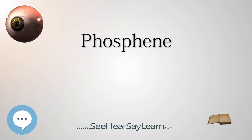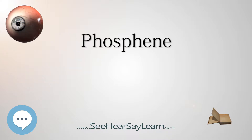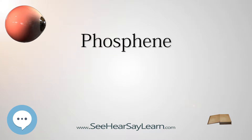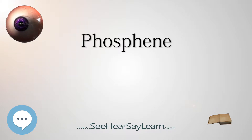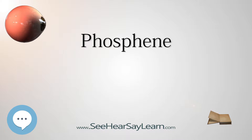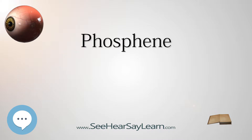Phosphenes that are induced by movement or sound may be associated with optic neuritis. Phosphenes can be directly induced by mechanical, electrical, or magnetic stimulation of the retina or visual cortex, as well as by random firing of cells in the visual system.